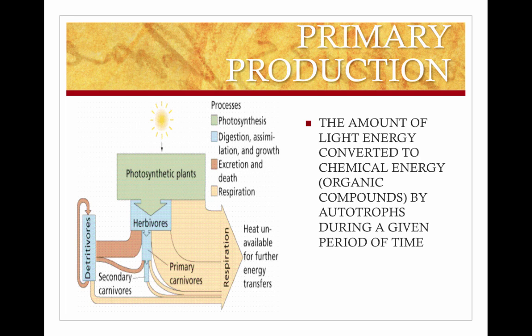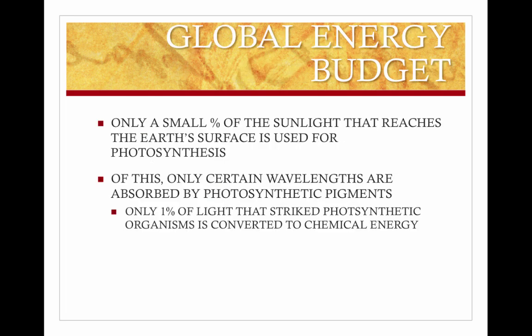Primary production is the amount of light energy converted to chemical energy, or organic compounds, by autotrophs during a given period of time — basically, the amount of light energy converted into glucose through the process of photosynthesis. The global energy budget looks at only a small percentage of the sunlight reaching the Earth's surface, since the sun radiates in all directions. Only a very small percentage of that is used for photosynthesis, and only certain wavelengths are used by photosynthetic pigments — mainly green chlorophyll — so only about 1% of the visible light that strikes photosynthetic organisms is actually converted into chemical energy.